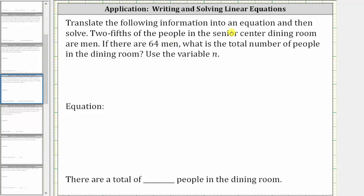We're asked to translate the following information into an equation and then solve. Two-fifths of the people in the senior center dining room are men. If there are 64 men, what is the total number of people in the dining room? And we're told to use the variable n.